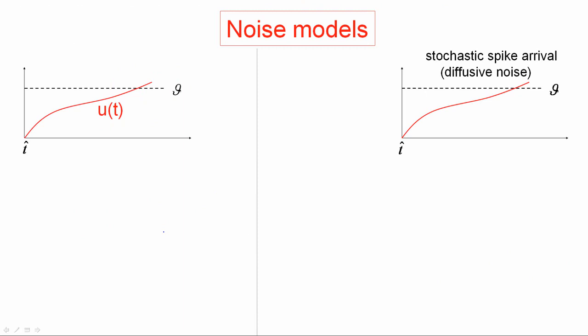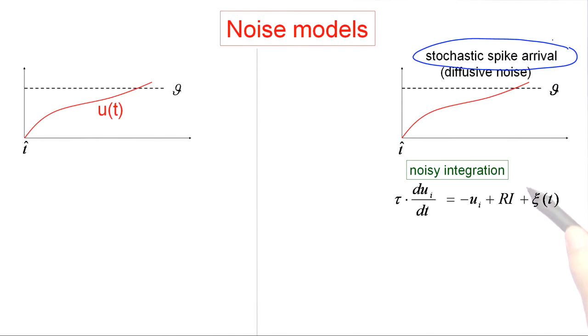Last week we saw a first noise model related to stochastic spike arrival. Suppose you have a leaky integrate-and-fire neuron—essentially a passive membrane. If you have a deterministic part of the stimulus, then integration of this equation will give a noise-free trajectory.